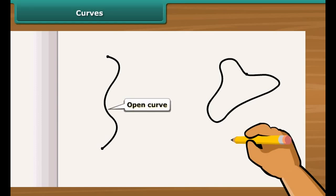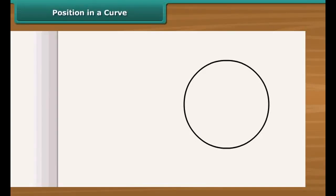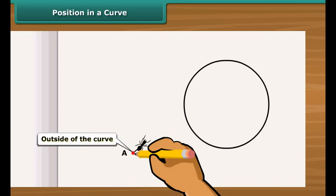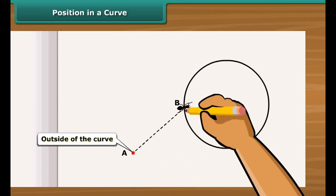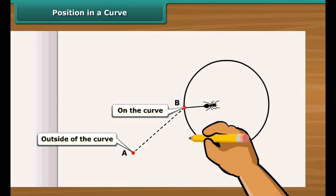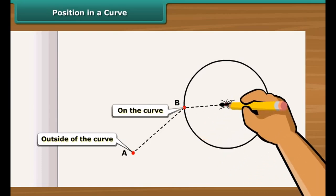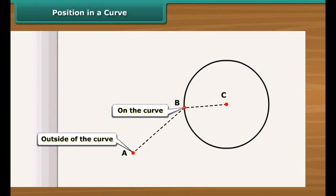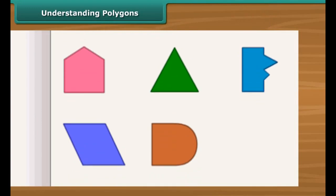Here you see a moving ant with reference to a closed curve. At position A, the ant is at exterior or outside of the curve. At position B, it is on the boundary or on the curve. At position C, the ant is at interior or inside of the curve.